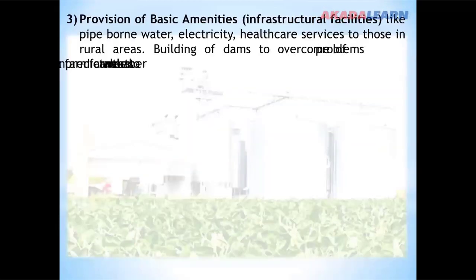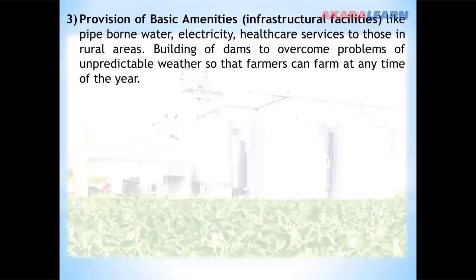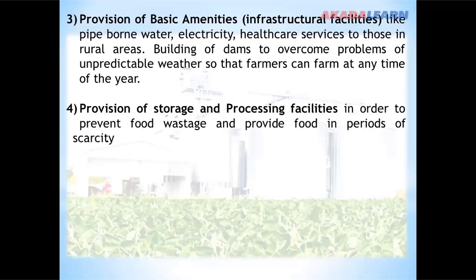Provision of basic amenities like pipe-borne water, electricity, and healthcare services to those in rural areas. Building of dams to overcome problems of unpredictable weather so that farmers can farm at any time of the year. Provision of storage and processing facilities in order to prevent food wastage and provide food in periods of scarcity.